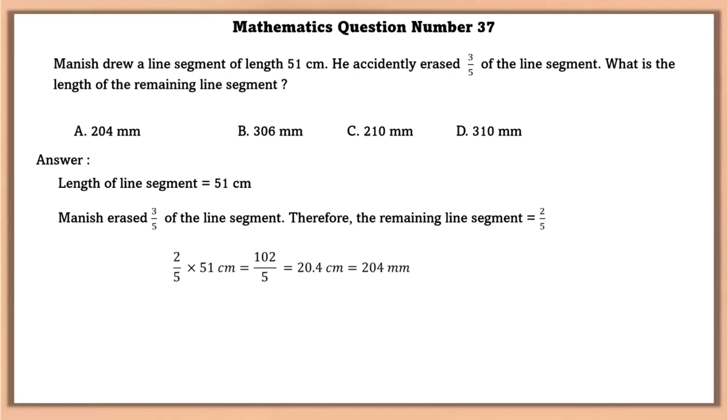Mathematics question number 37. Manish drew a line segment of length 51 centimeters. He accidentally erased 3 by 5 of the line segment. What is the remaining length of the line segment? Length of line segment is equal to 51 centimeters. Manish erased 3 by 5 of the line segment. Therefore remaining is equal to 2 by 5. So 2 by 5 of 51 is equal to 204 millimeters.